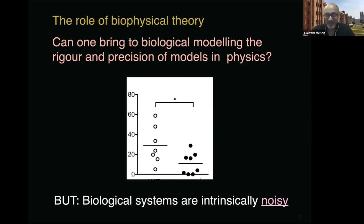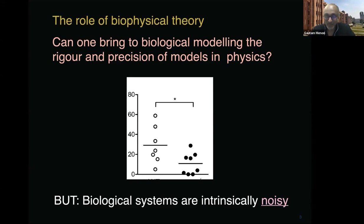We can now ask: can you bring to biological modeling the same sort of rigor and precision that physics models achieve? That's typical biological data — I've carefully disguised the axes because the point is that this data is very noisy. Biological systems are intrinsically noisy, and you will have no situation where you can measure anything to the accuracy seen in the blackbody case.